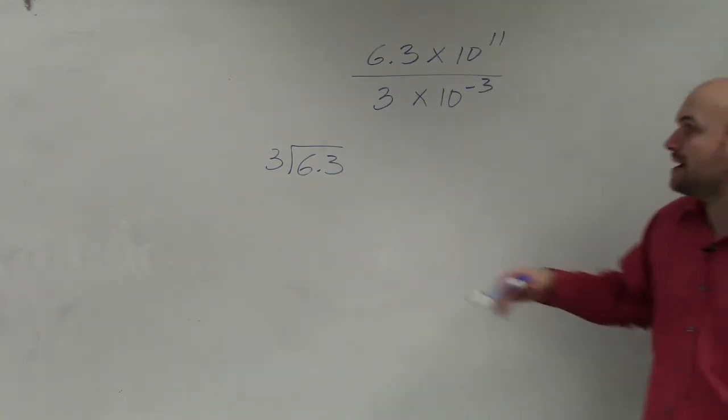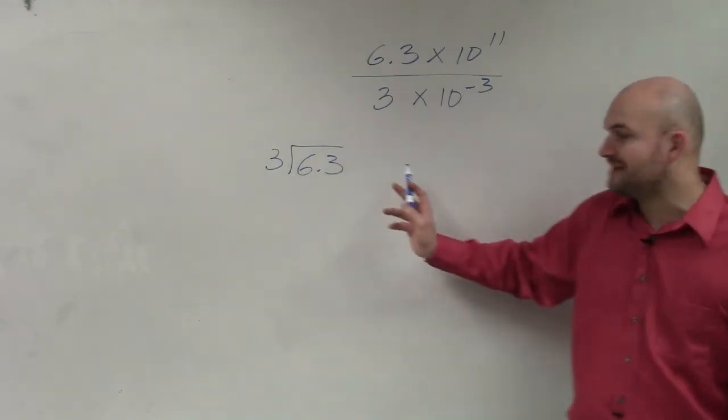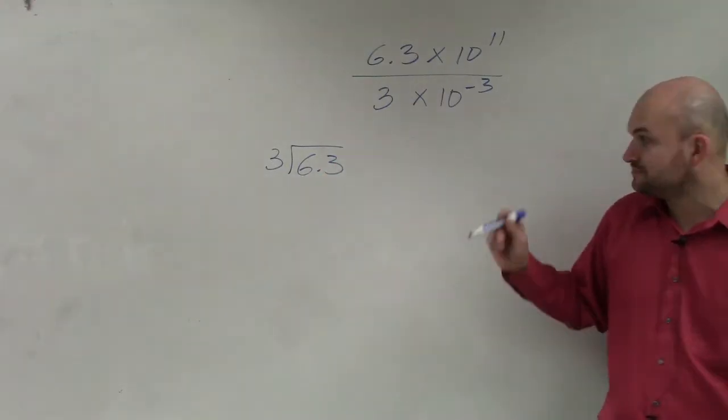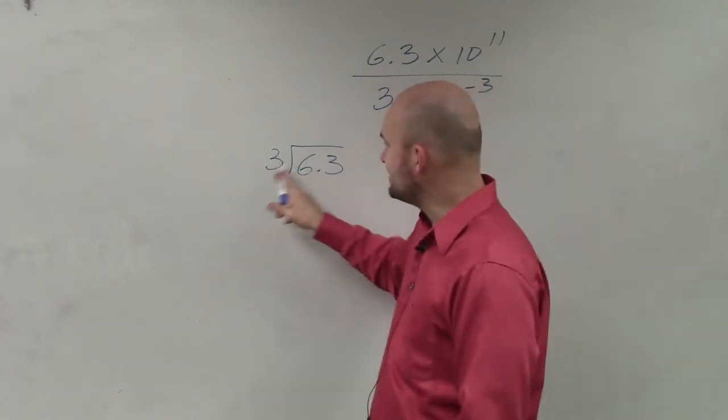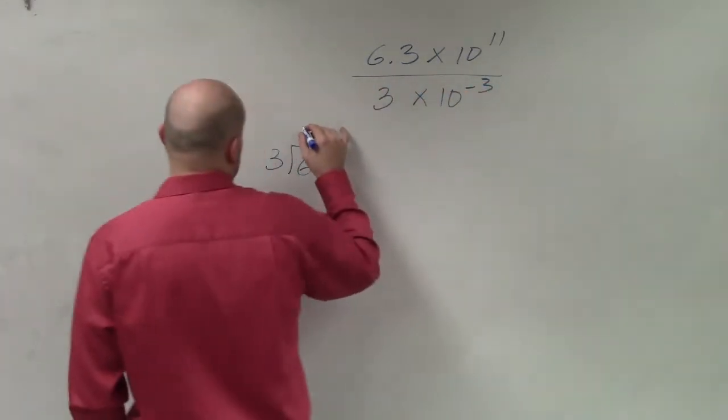So the first thing is to go back and remember how to do our division. So when we're dividing 3 into 6.3, I'm basically just going to work on this one at a time. 3 goes into 6, we can say 2 times.